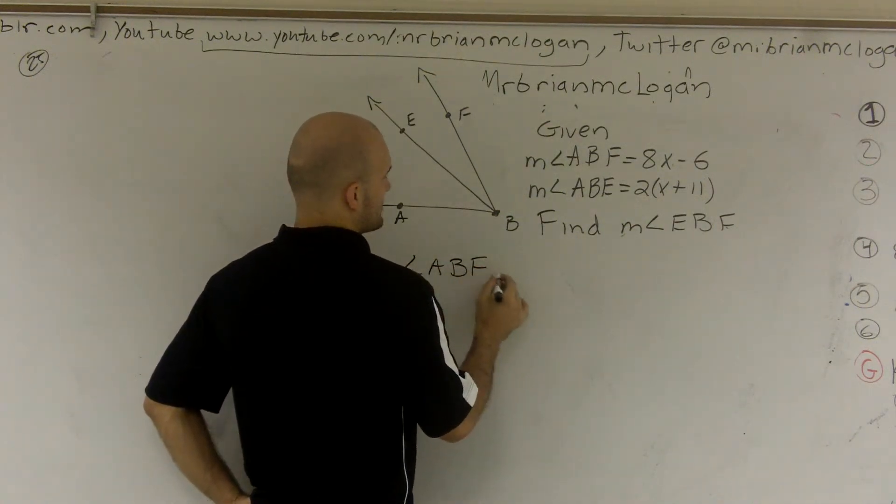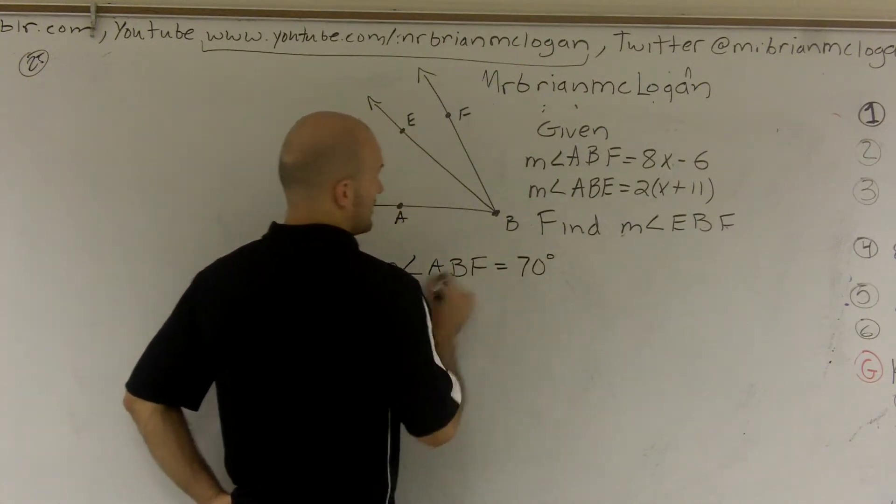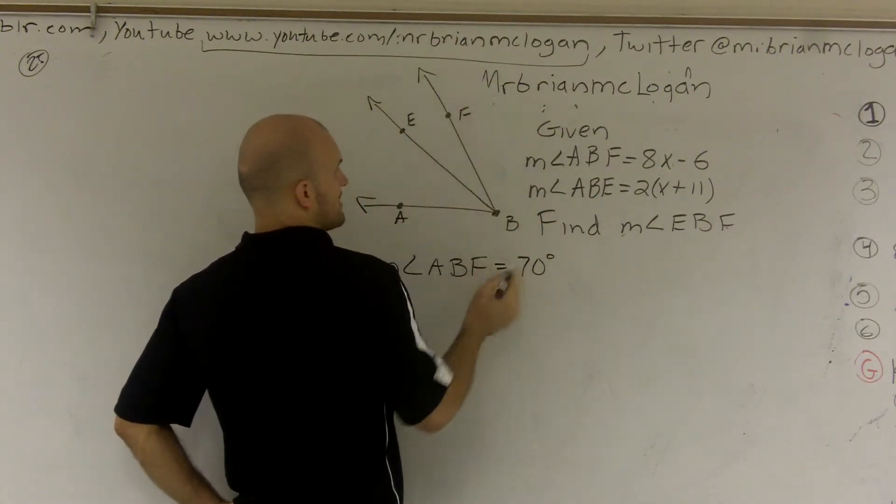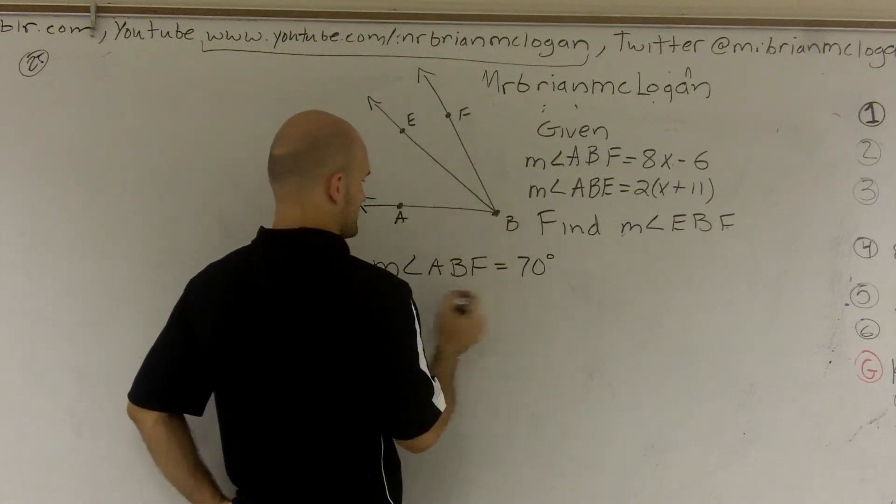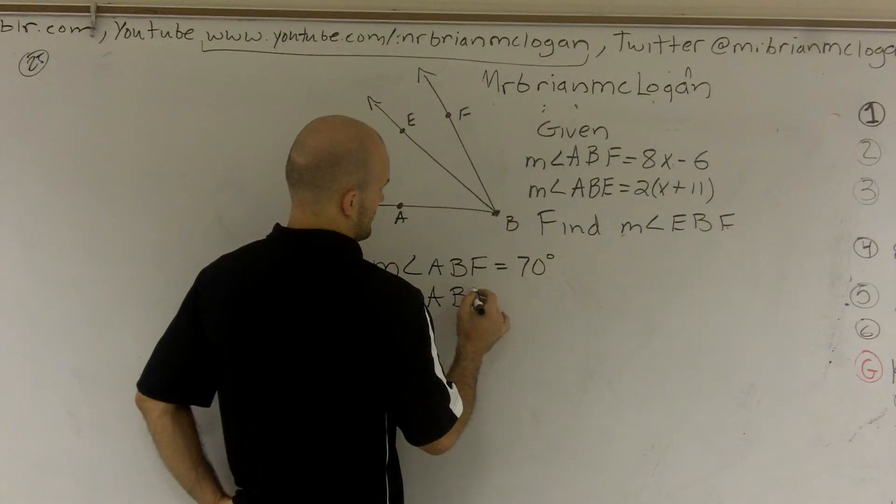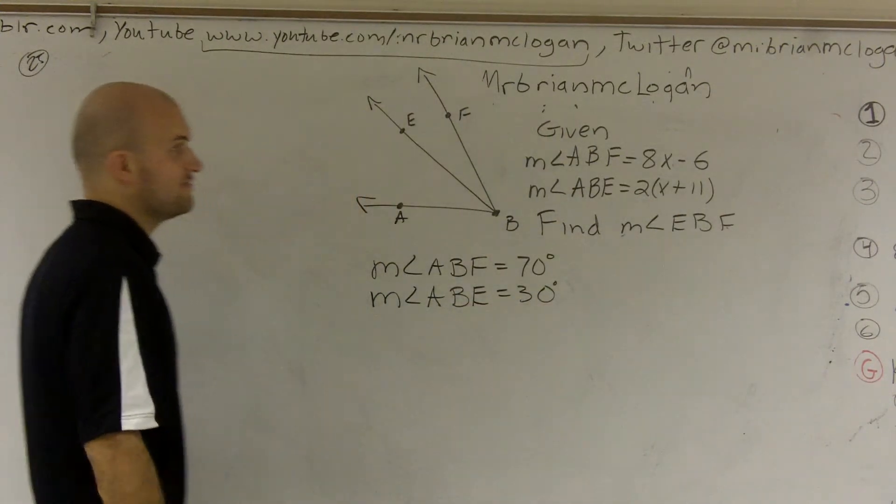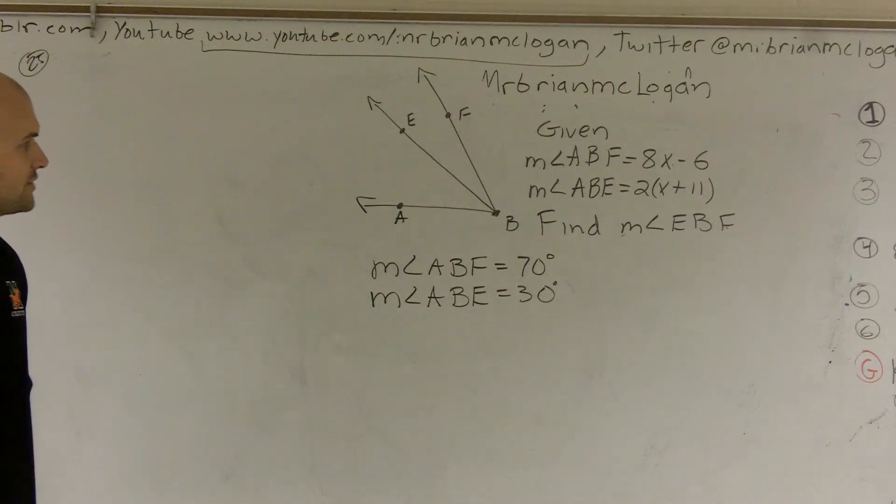Let's just use some random numbers. Let's use 70 degrees. And then angle ABF is 70 degrees. And then ABE has to be smaller, so measure of angle ABE equals 30. All right? So we have two values right now: we have 70 and 30 degrees.